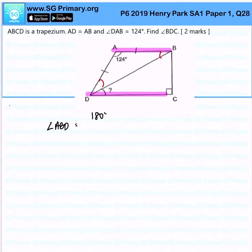How do I get that? Because I know that triangle ADB is actually an isosceles triangle, so 180 minus 124 degrees divided by 2 equals 28 degrees. And because of alternate angle, look at this, now I form an alternate angle.